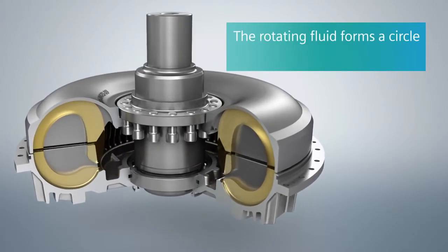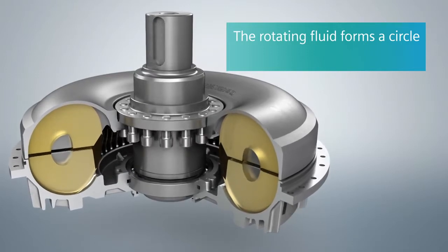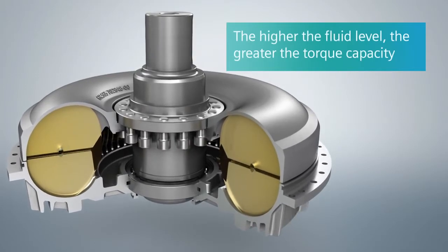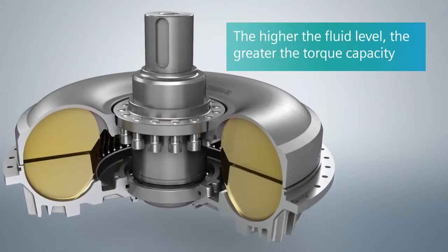As the rotation speed increases, the rotating fluid makes a circular motion between the pump wheel and the turbine wheel. As the fluid level increases, so too does the torque capacity of the coupling.